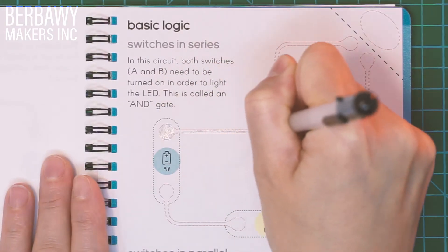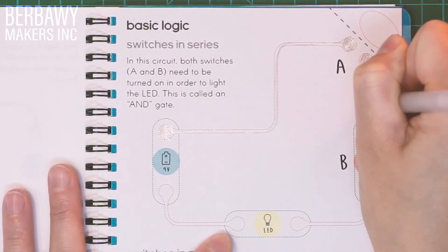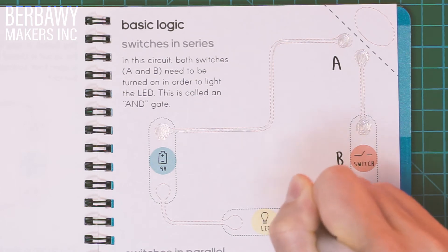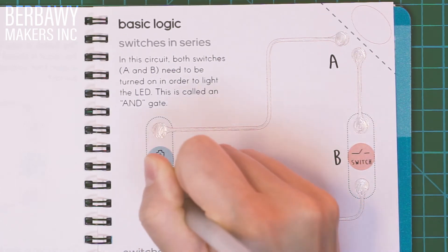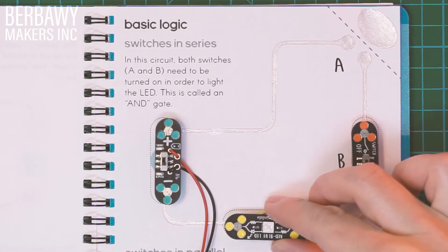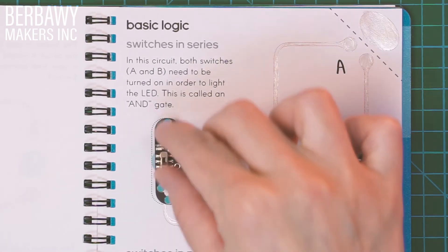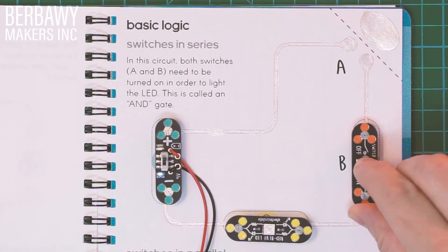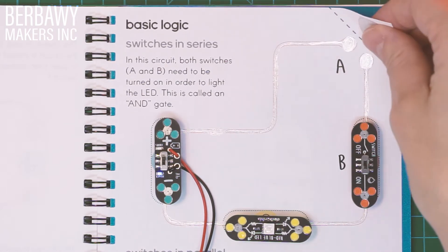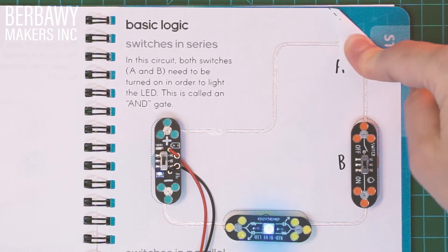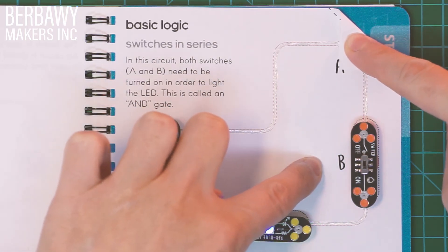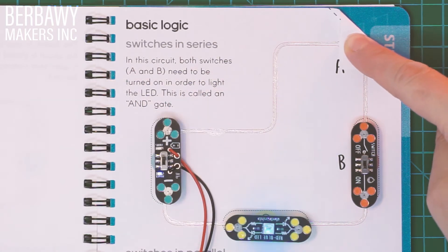Switches can help us learn about basic logic. The circuit I'm drawing right now is an AND gate. In an AND gate, both component A and component B have to be on in order for current to flow. I'll turn my battery on and my Circuit Scribe switch on, and notice nothing happens with my LED until I close my momentary switch. Switch A and switch B both have to be activated in order for the current to flow.